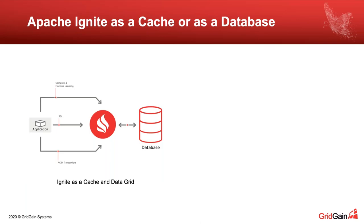First, let's check the Ignite storage engine internals. To remind ourselves how Ignite is being used: the primary use cases will help us understand the most frequent configuration settings of the storage engine. With the first use case, Ignite is deployed as a distributed in-memory cache. In that configuration you use only the in-memory storage tier of Ignite.